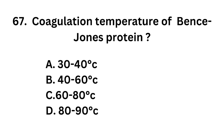Question number 67. Coagulation temperature of Bence-Jones protein: Option A, 30 to 40 degree Celsius; Option B, 40 to 60 degree Celsius; Option C, 60 to 80 degree Celsius; Option D, 80 to 90 degree Celsius.